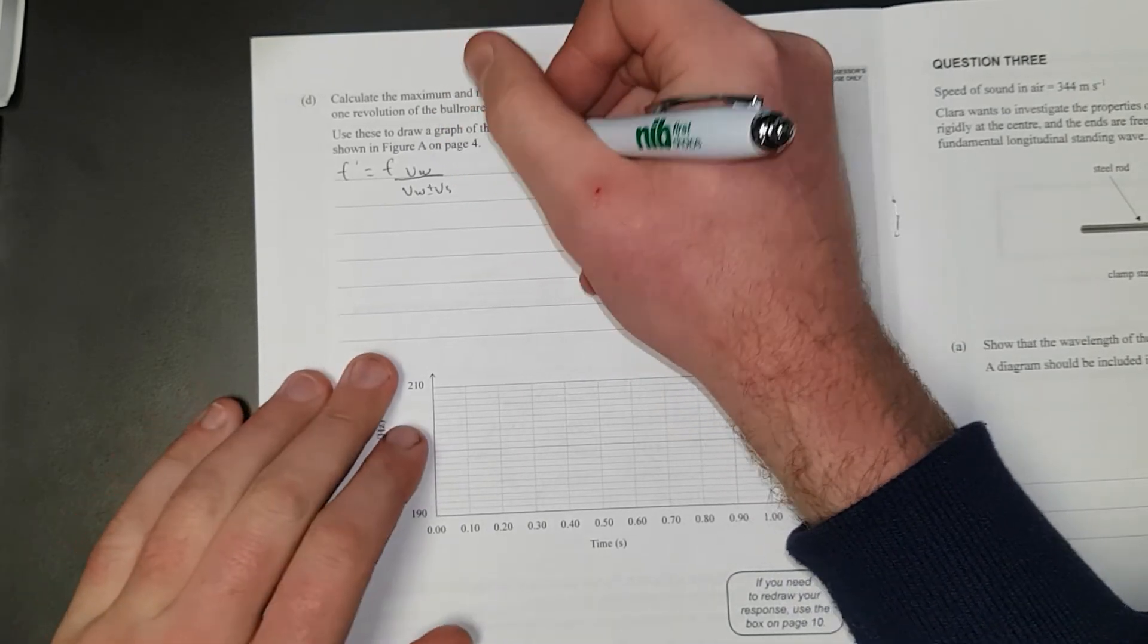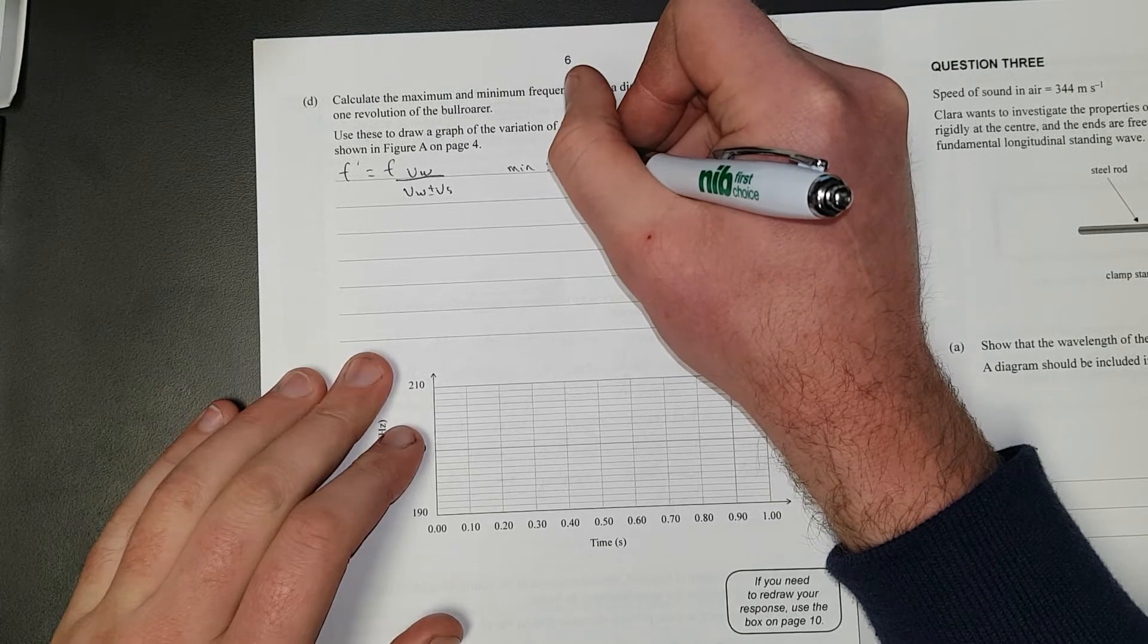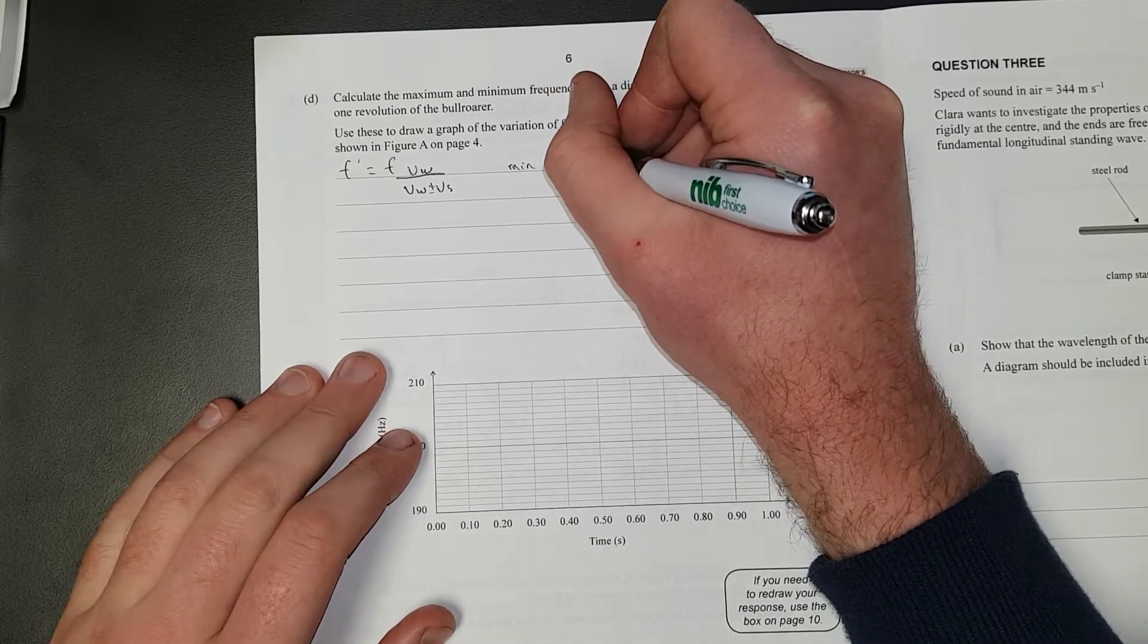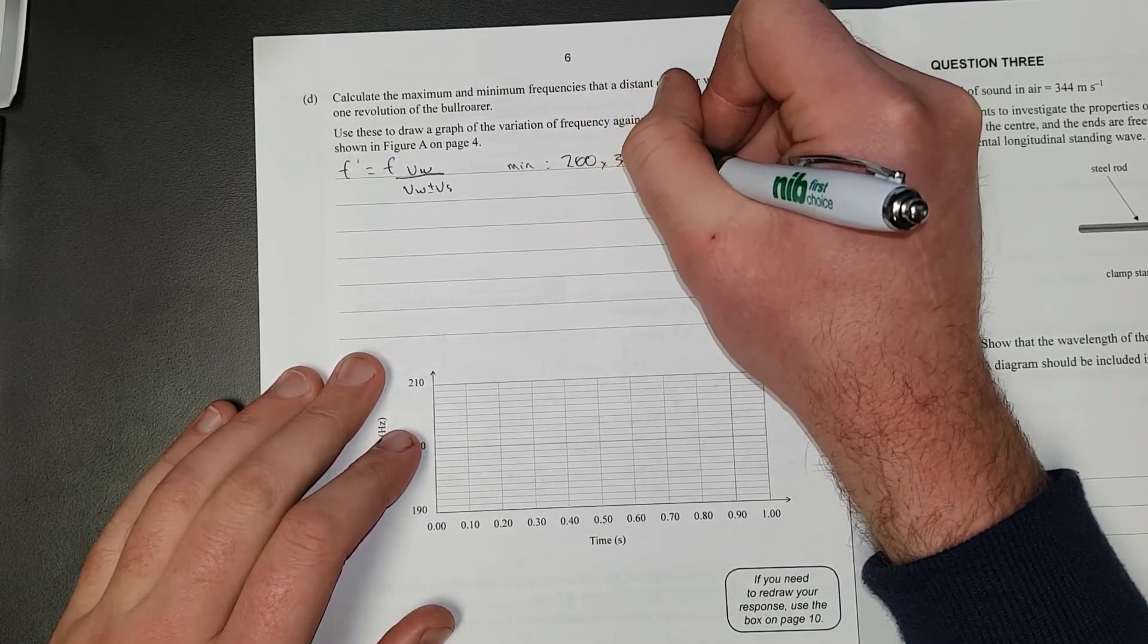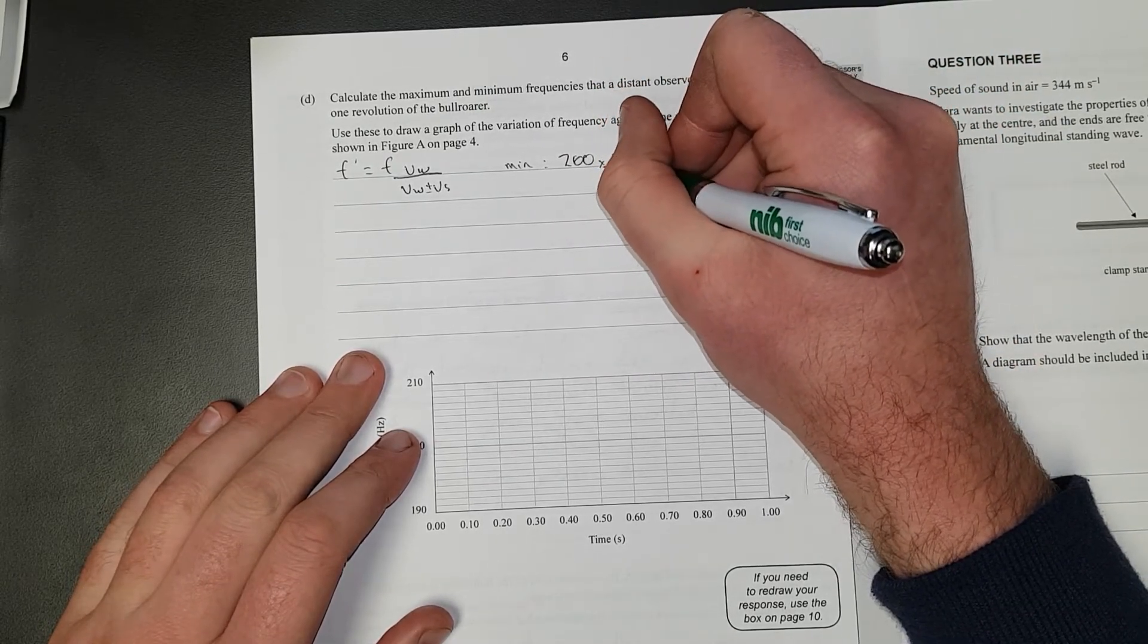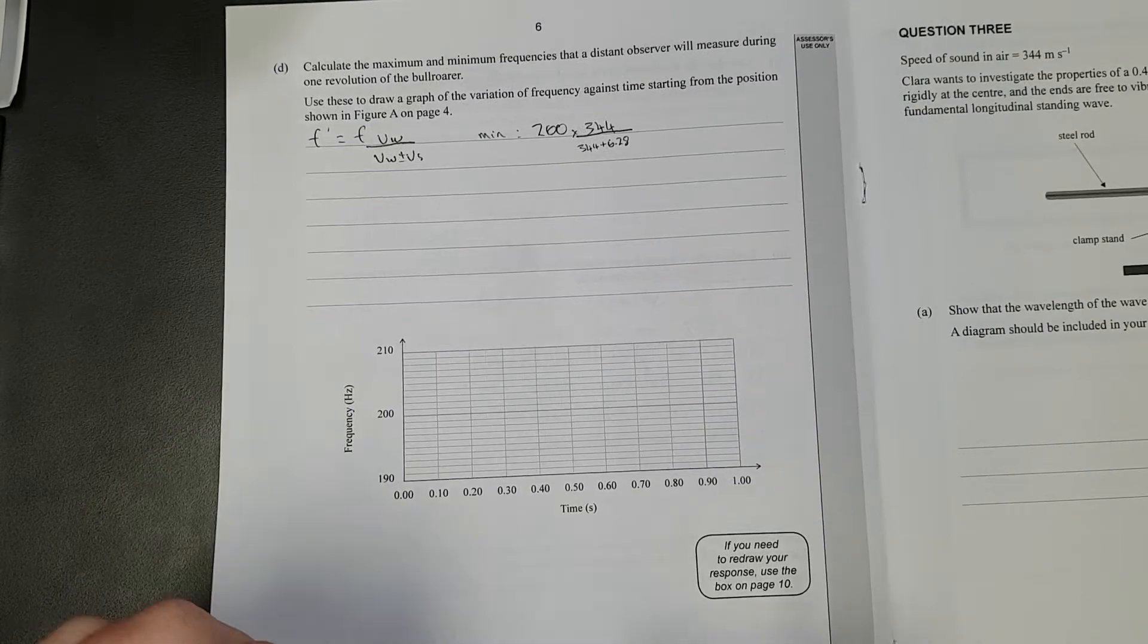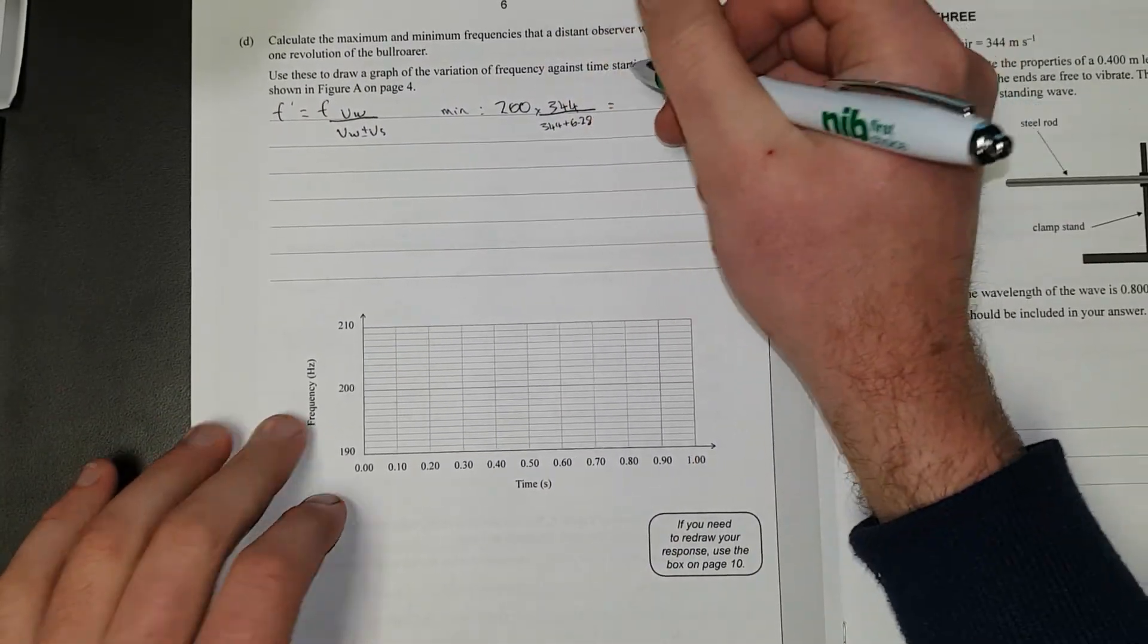And I'll do the minimum frequency. So the minimum frequency is going to occur when we have, it is going to be 200 times 344 divided by 344 plus 6.28. It is 6.28. So it's going to be equal to...